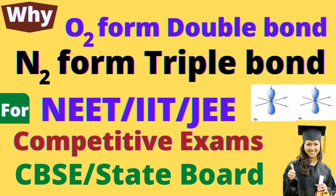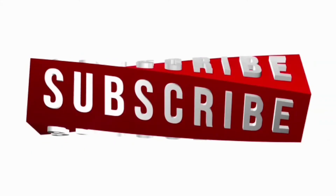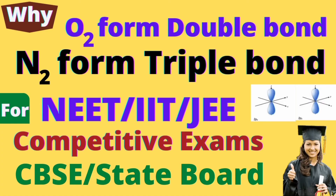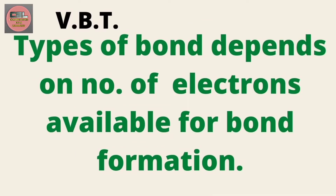Hi guys, welcome to competitive exam learning channel. Today you are going to learn why oxygen molecule forms a double bond, while a nitrogen molecule forms a triple bond. On the other hand, hydrogen molecule has a single bond. Why does single bond form in some cases, double bond in others, and triple bond in yet others?